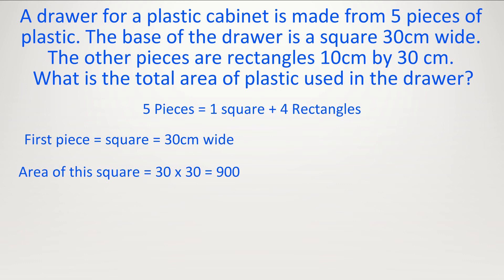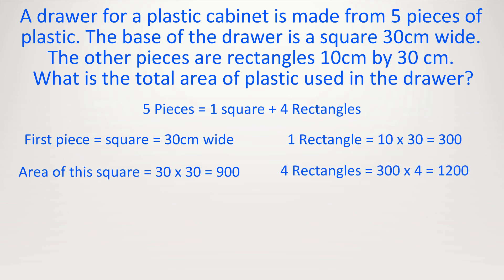The other pieces: it's a rectangle 10 times 30 which is 300. But how many of these are there? At the start they told you there are 5 pieces. One piece is already the square at the bottom, so there are 4 pieces left. One area equals 300 centimeters squared, so 4 areas equals 300 times 4 equals 1200. So 1200 plus 900 equals 2100 centimeters squared.